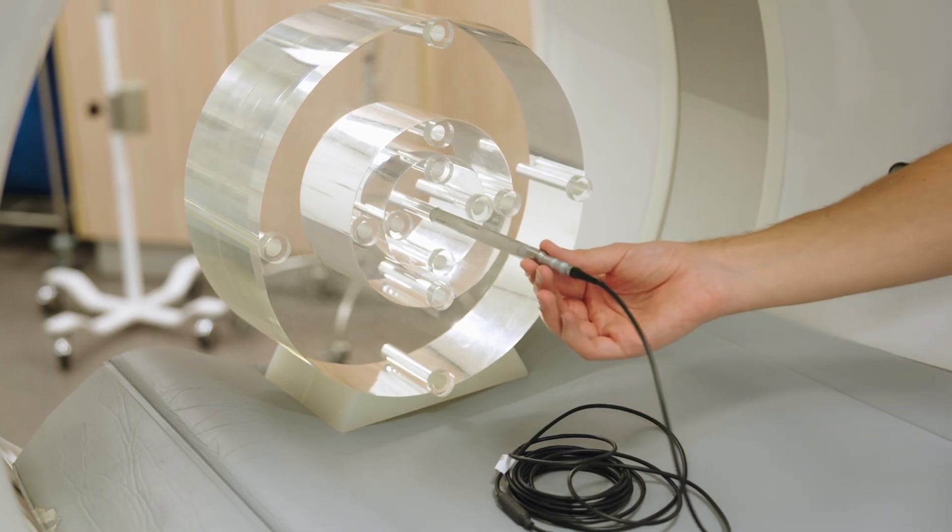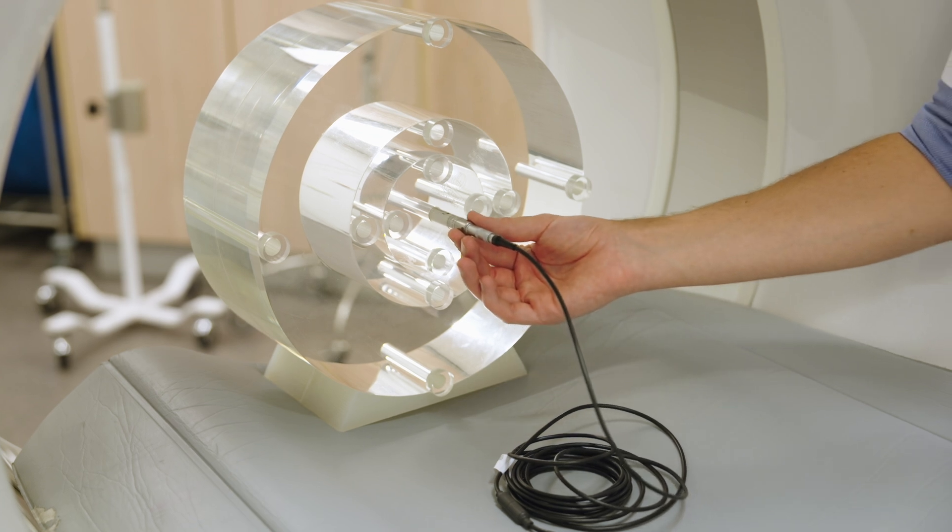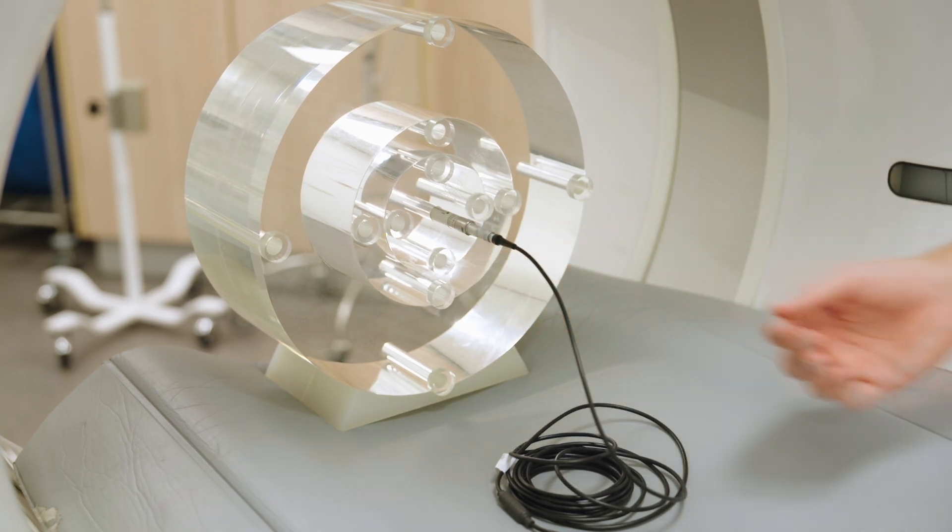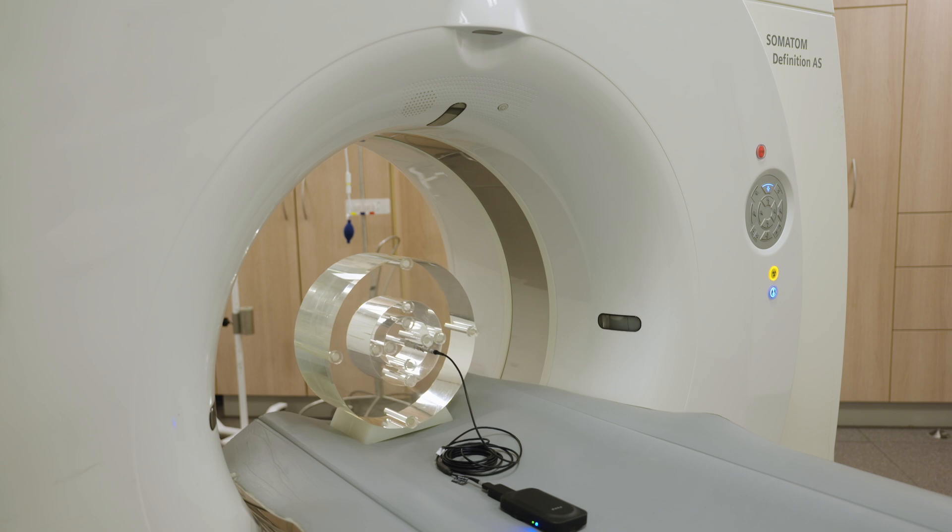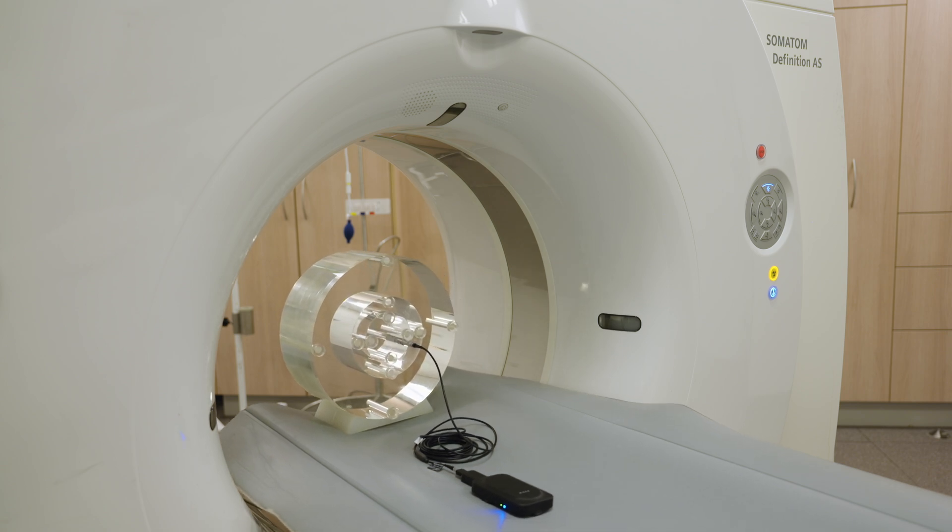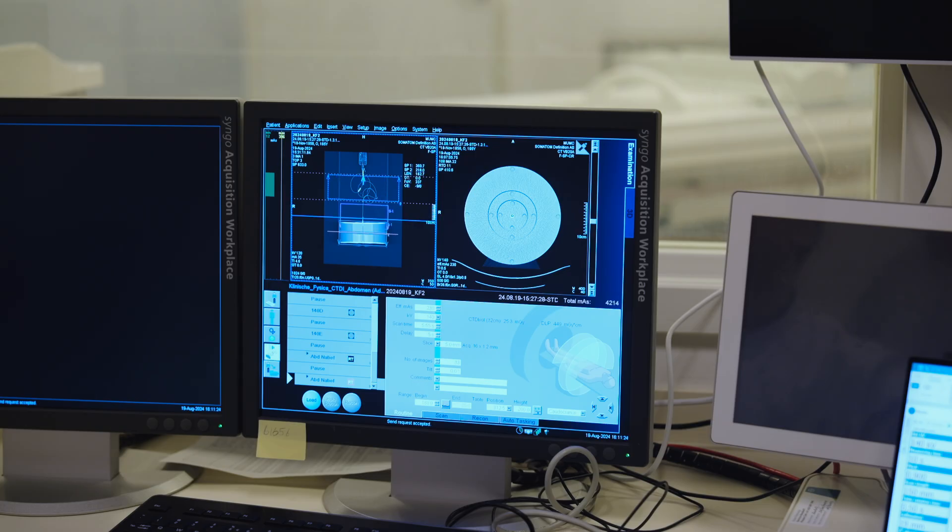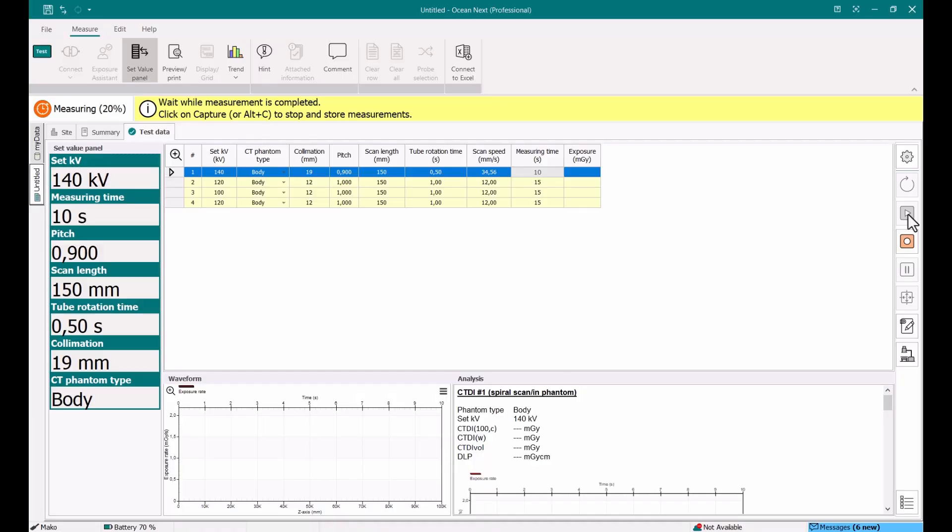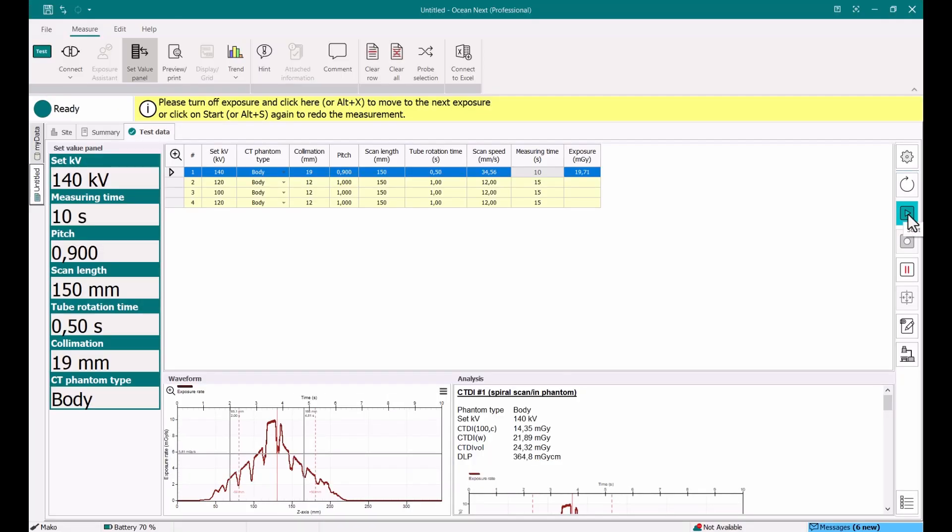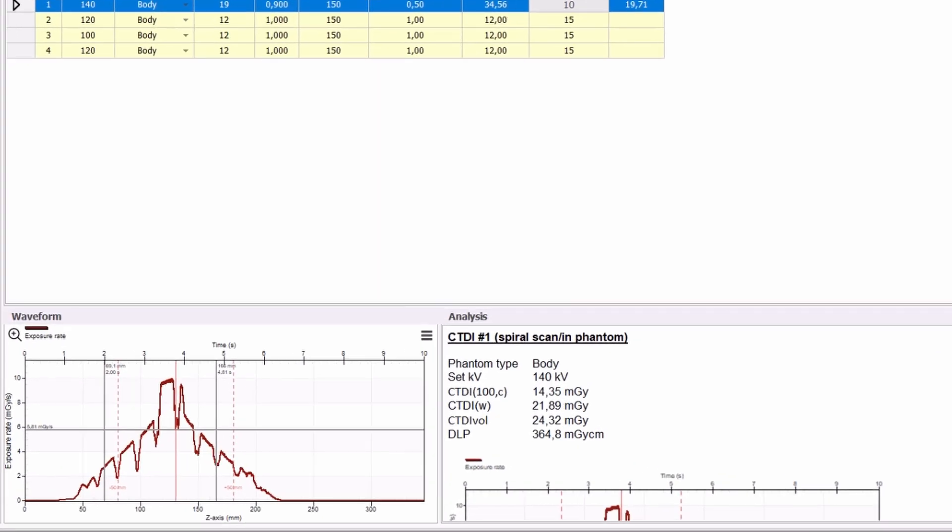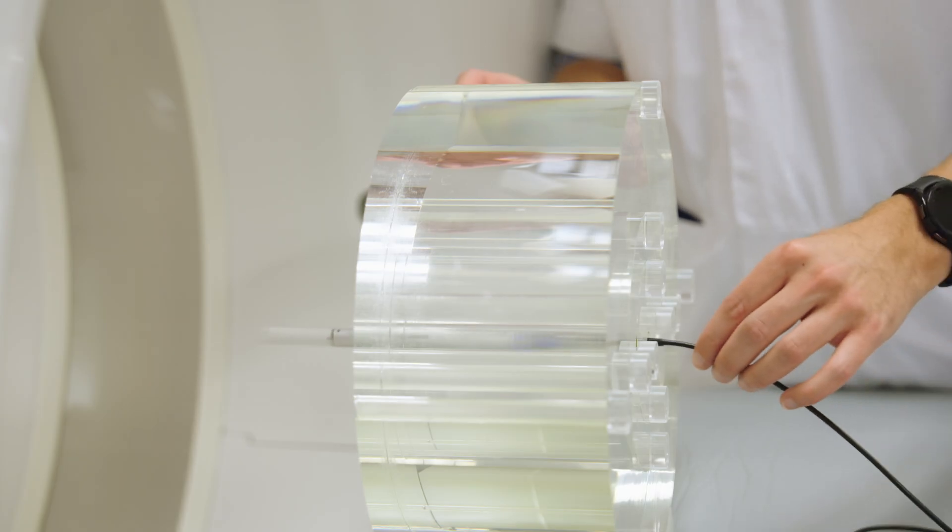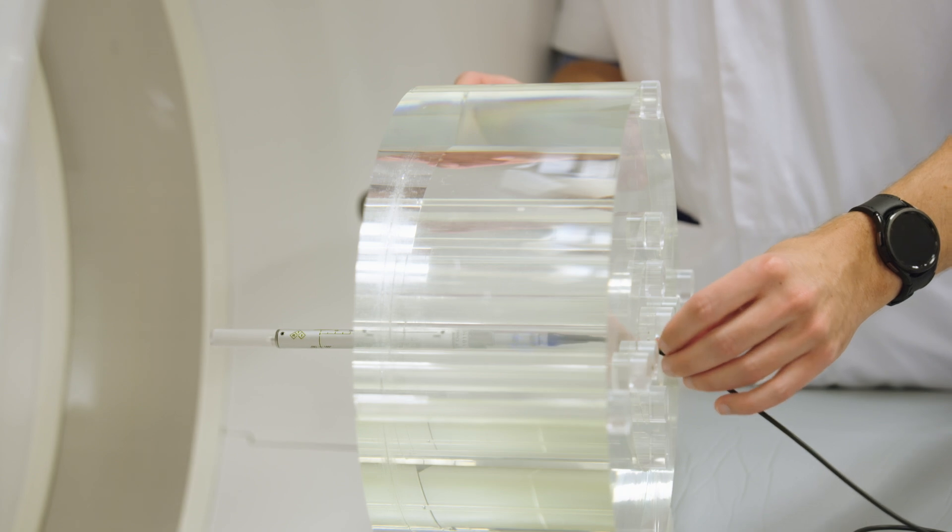For routine performance checks, the CT dose profiler provides the same information with one helical scan, saving time and saving the x-ray tube. Simply place the dose profiler into the central hole of the phantom and perform a helical scan. Parameters for CT dose index and dose length product are displayed, streamlining the x-ray testing process.